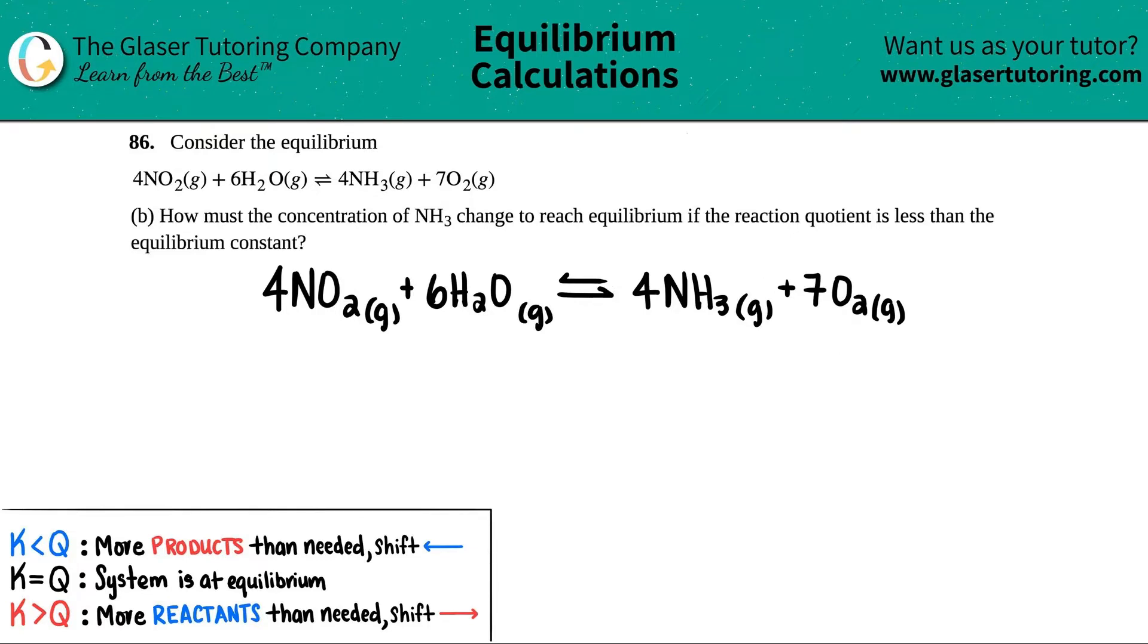And then for letter B, it says, how must the concentration of NH3 change to reach equilibrium if the reaction quotient is less than the equilibrium constant?